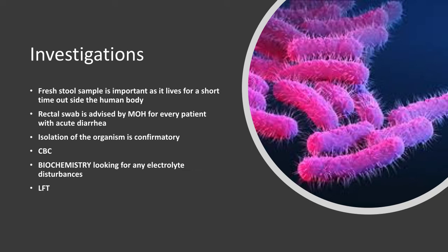Ultrasound of the abdomen in acute renal failure would be normal, while in chronic renal failure the kidneys are usually shrunken with no corticomedullary differentiation, except in polycystic kidney disease where kidneys are large but still lack corticomedullary differentiation.